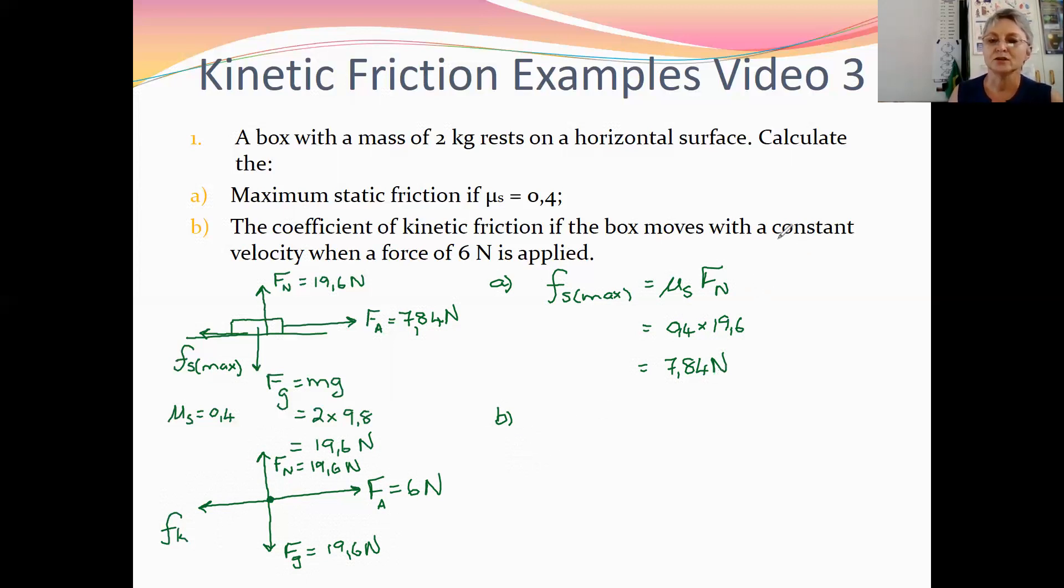Now if the box moves with a constant velocity, it means that the kinetic friction would be equal in size to the applied force because the net force in the horizontal direction is 0. So the kinetic friction would be 6 newtons.